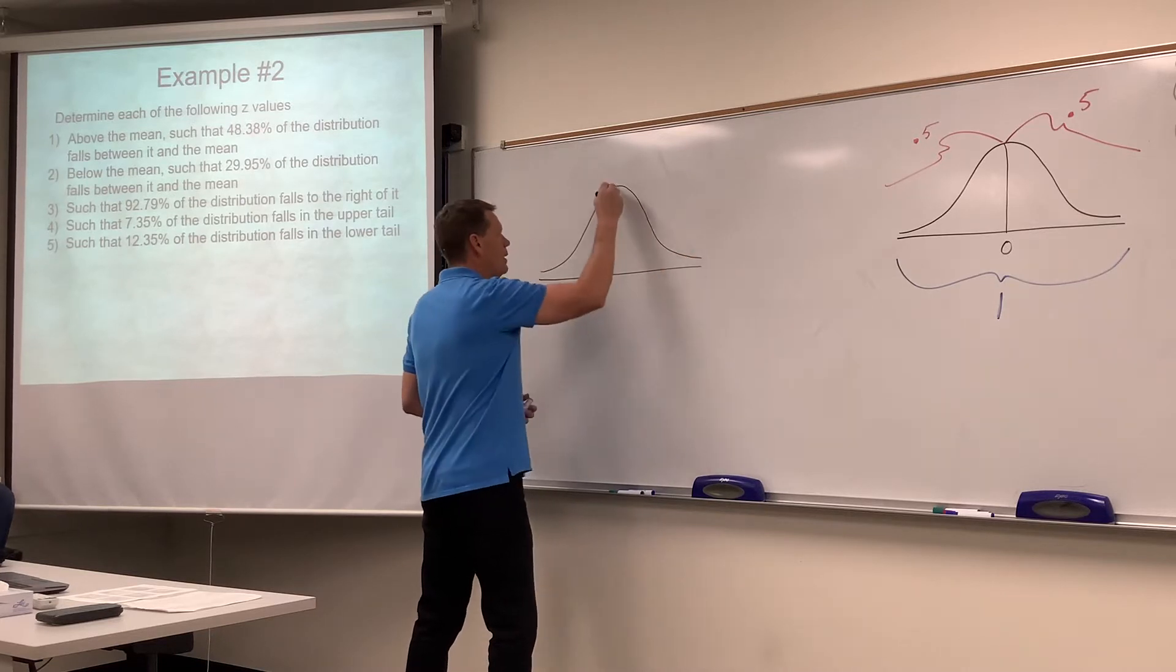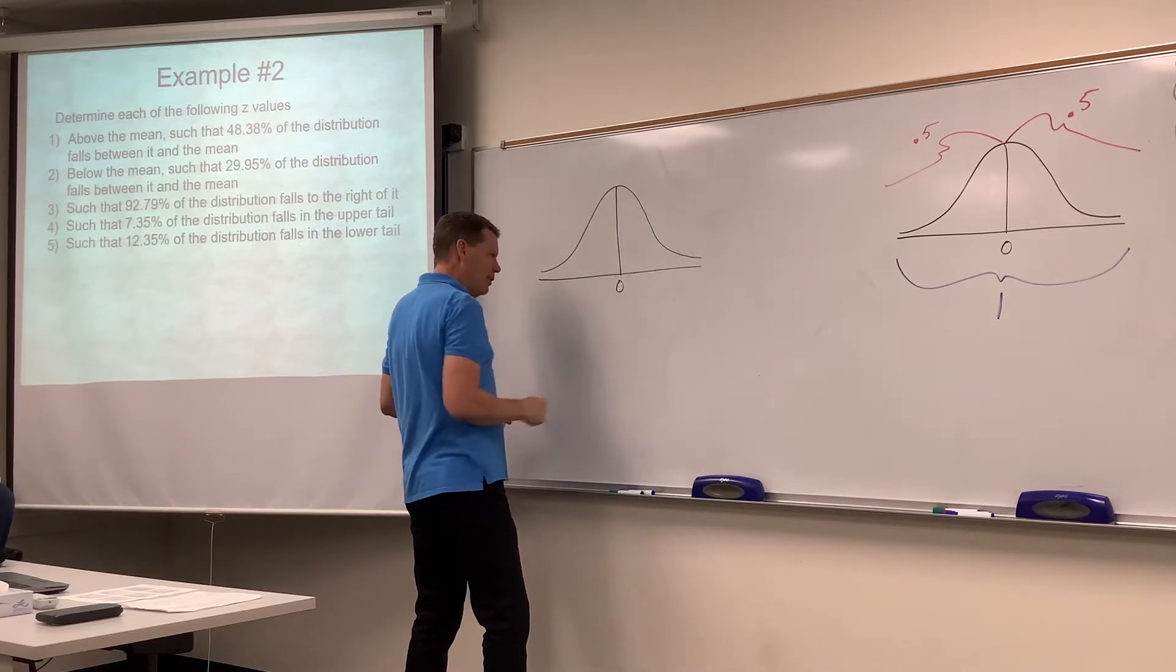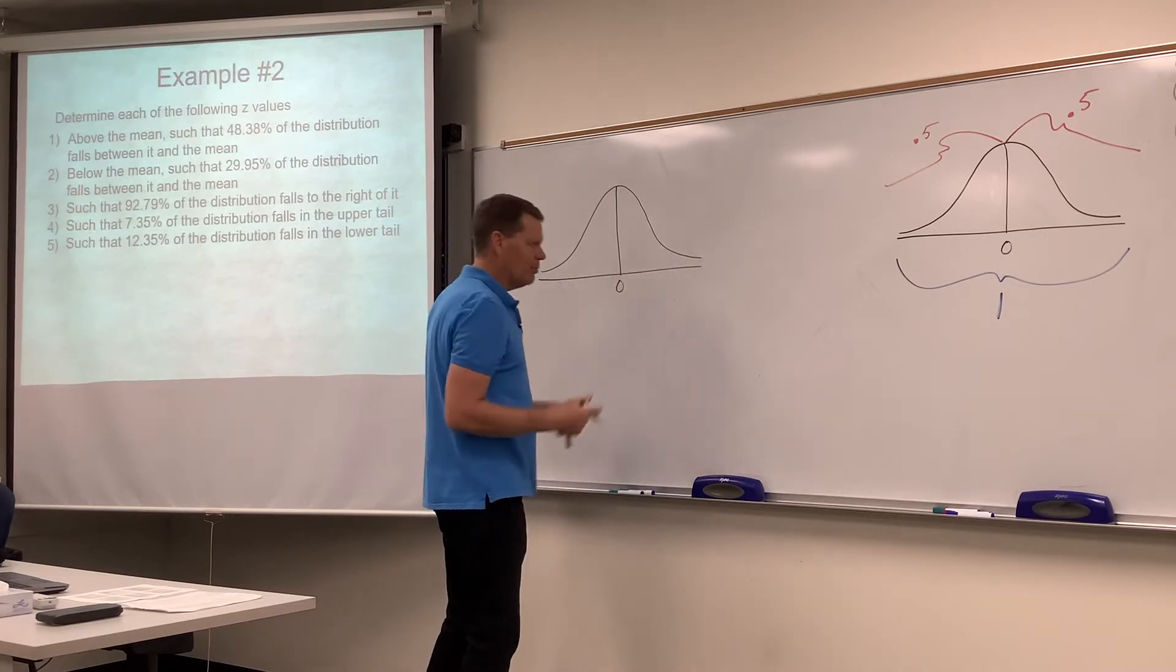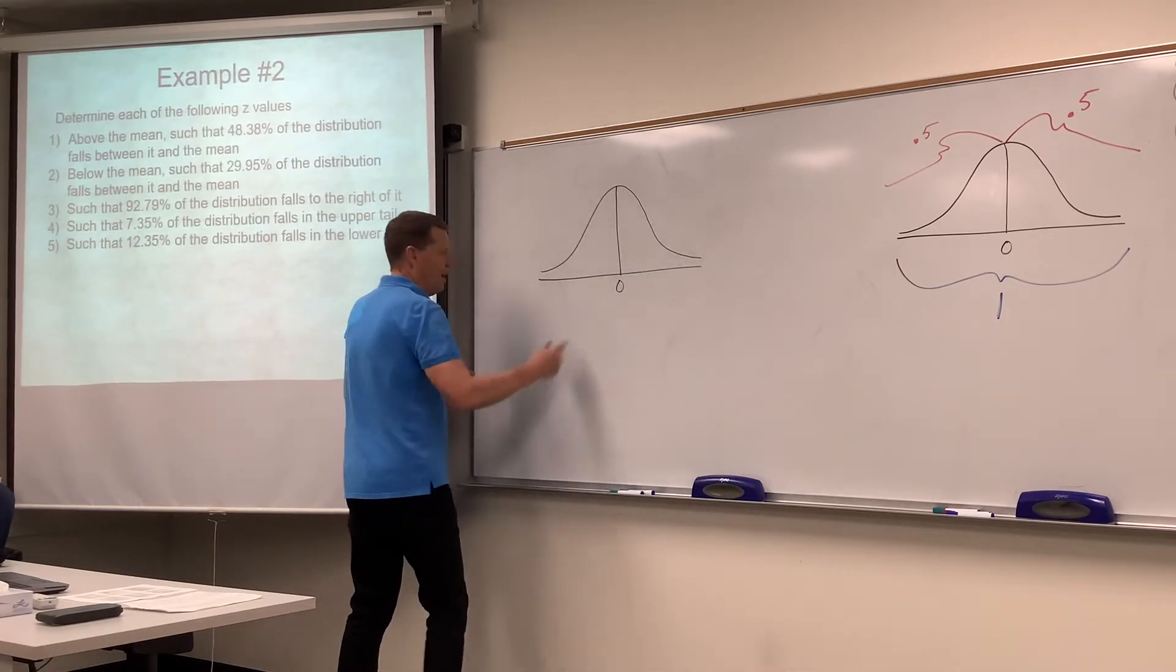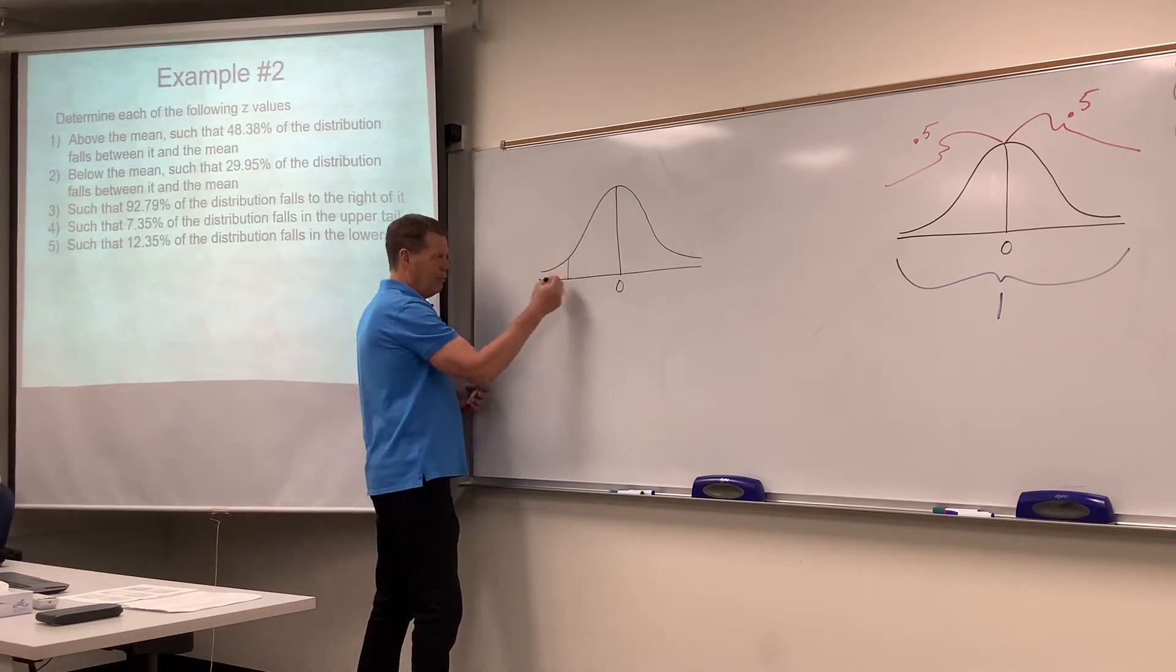So anyway, we have a bell curve with zero in the middle. We've got our general picture over here, which might come into play. This talks about a lower tail, so on the lower half of the curve, lower tail.